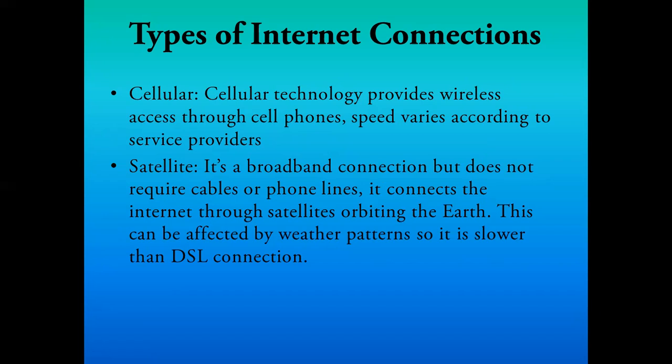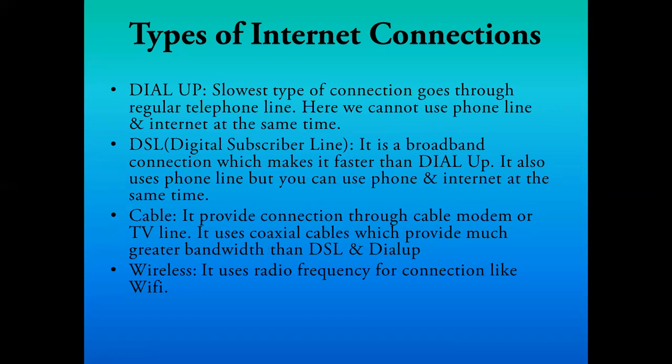The last is satellite connection, which is also a broadband connection but does not require any cable or phone line. It connects to the internet through satellites orbiting the Earth. A dish installed on top of your home catches signals from the satellite. However, this connection does not work well if there is disturbance in weather — on windy or rainy days it stops providing internet or TV signals, so it is not recommendable for internet. The best type of connection is cable wire, which gives good speed and greater bandwidth.